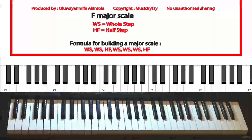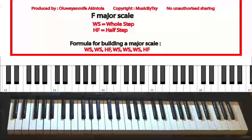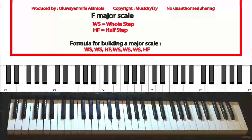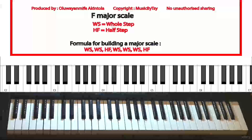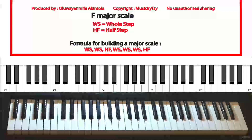What's up guys, welcome to this lesson. In this lesson we're going to be learning about the F major scale. In order to build a major scale for any key there is a formula that we can use. The formula goes like this: you start from the starting key you want to start from — in our case the key of F — then you take a whole step, another whole step, a half step, a whole step, a whole step, a whole step, and then a half step. We're going to be using this formula to construct the major scale for the key of F.